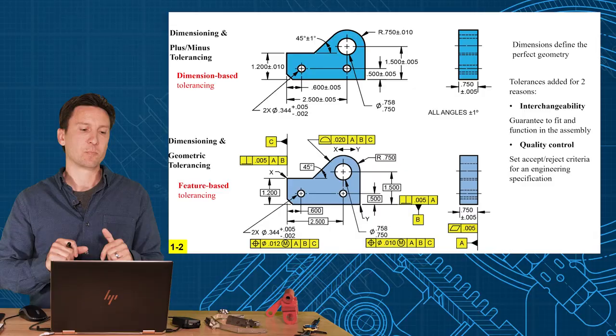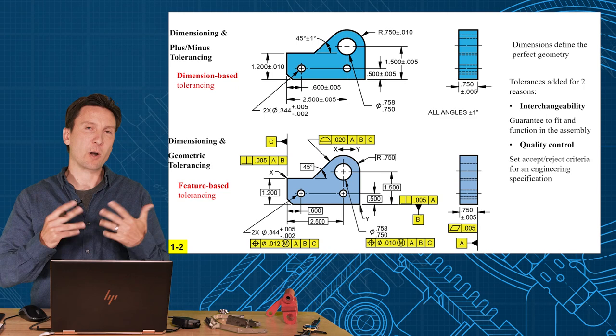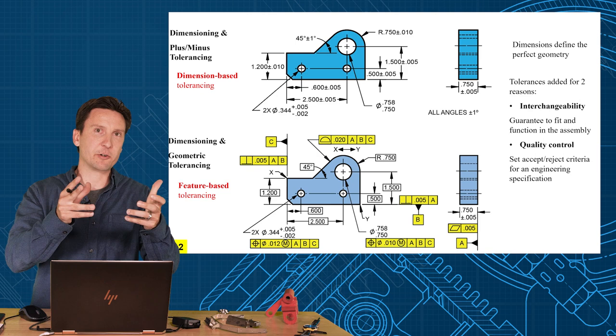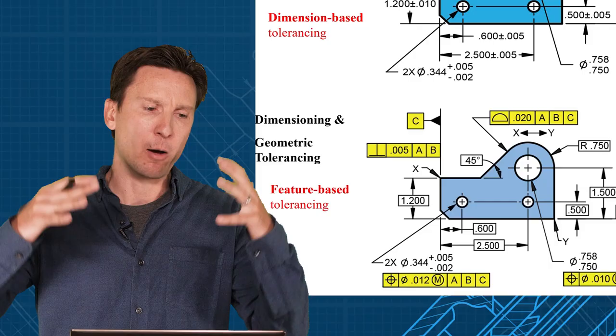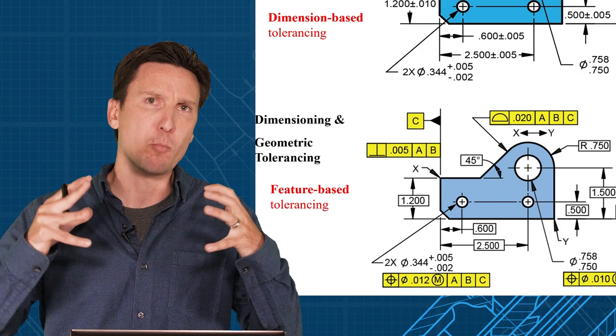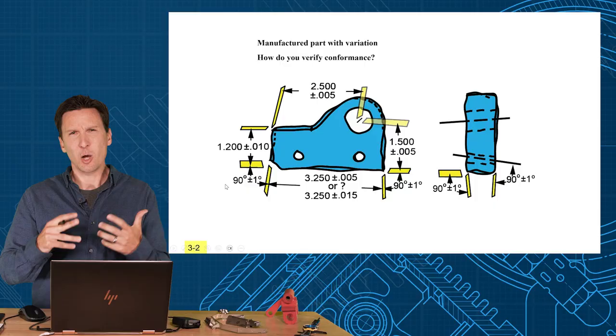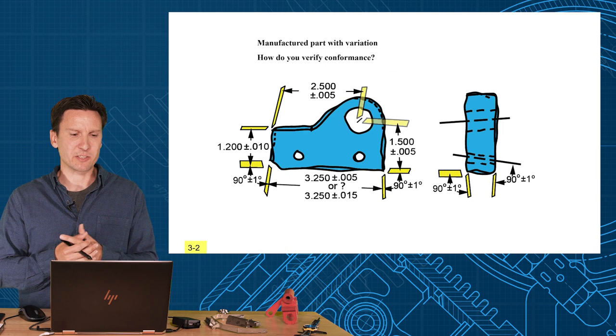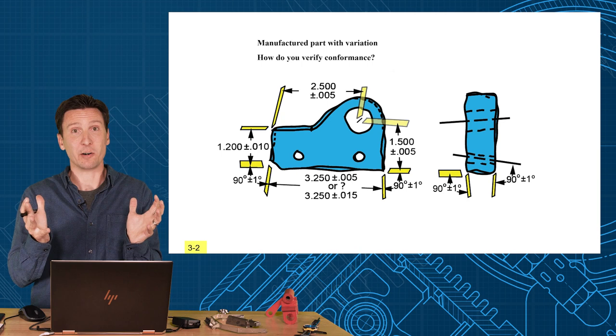Plus-minus is a dimension-based tolerancing system. Every dimension gets a tolerance. And geometric tolerancing is a feature-based tolerancing system. Every hole, every slot, every surface gets a tolerance. What I found when being in industry for a while, companies are a bit of a mixture. They use some plus-minus on their dimensions and then they use some geometric tolerancing on the features. But what we're going to try to push for is more geometric tolerancing, better control on our parts. We found a lot of problems with plus-minus tolerancing. It's just too simplistic. When you think of the three-dimensional variations you can actually have on the part, it's actually quite complicated.